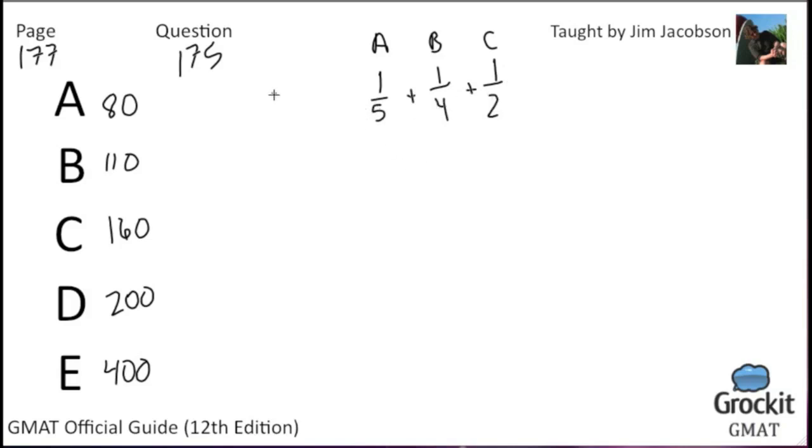We want to turn this whole thing into 20ths. We need to multiply this guy times 4, this guy times 5, and this guy times 10. So the A's are 4 20ths, the B's are 5 20ths, and the C's are 10 20ths. Add that all together, 19 20ths of the students got A's, B's, or C's, which means then that one-twentieth of the class got D's, and we know that that equals 10 students.